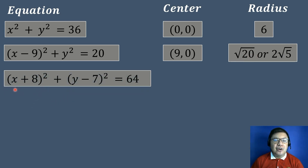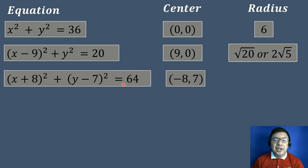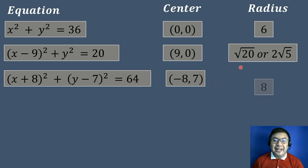Next example: the quantity of x plus 8 to the second power plus the quantity of y minus 7 to the second power equals 64. Since the value of h is positive 8, it becomes negative 8. The value of k is negative 7, so it becomes positive 7. The coordinates of the center are (-8, 7). Since 64 is a perfect square, its square root is 8, and the factor is 8 times 8 or 8 to the second power. Therefore, the radius is equal to 8.